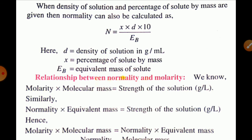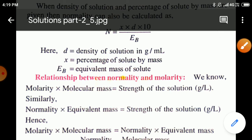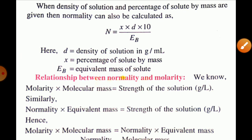When density of solution and percentage of solute by mass are given, normality can also be calculated as: N = (x × d × 10) / Eb. Here x is the mass percentage of solute, d is the density of solution, and Eb is the equivalent mass of solute.